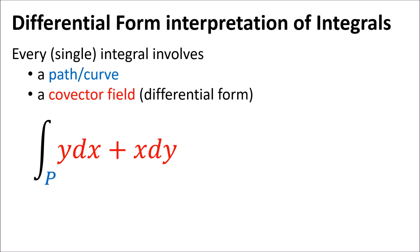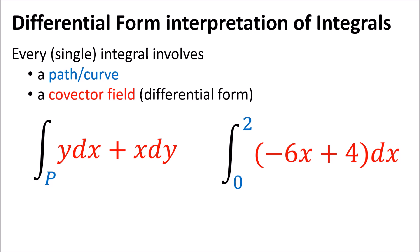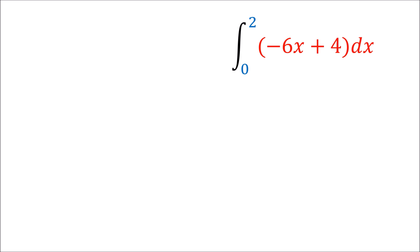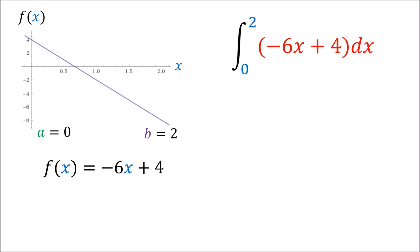This integral is an example of a path integral in the 2D plane, and this one is just an ordinary single-variable integral in the x direction. In our old interpretation, we would take the line negative 6x plus 4 and find the area between it and the x-axis between x equals 0 and x equals 2. This area here would be positive, and this area here would be negative.